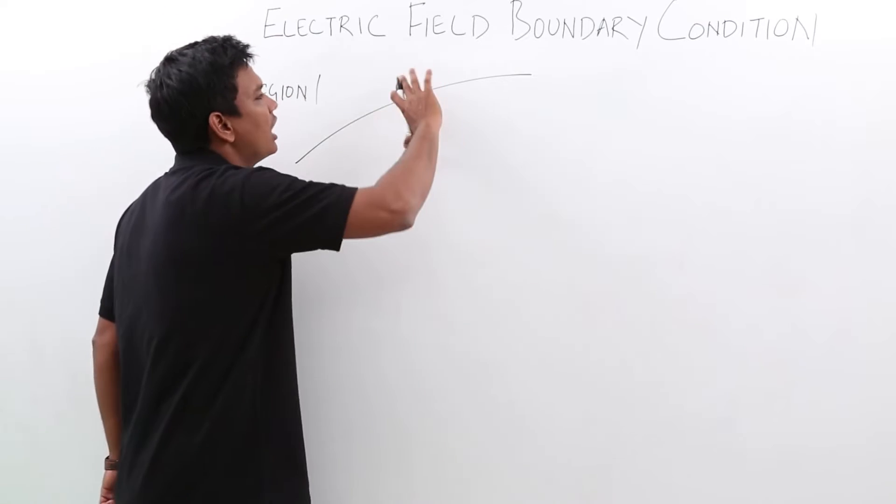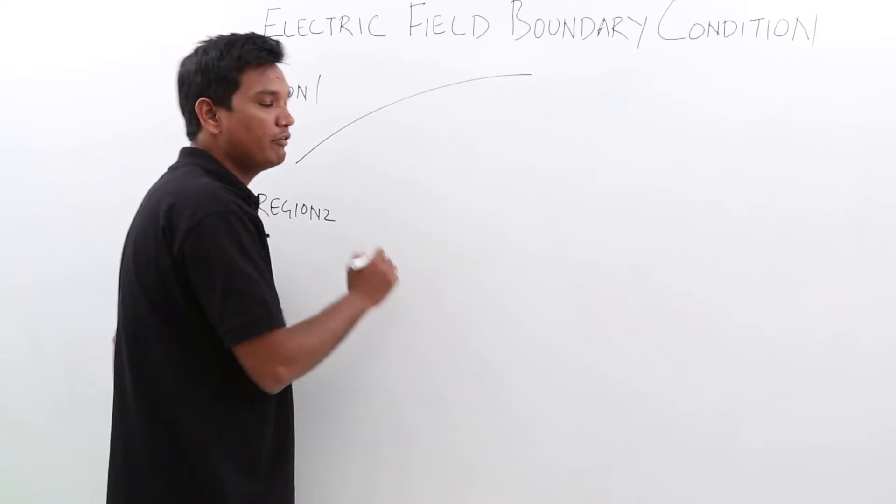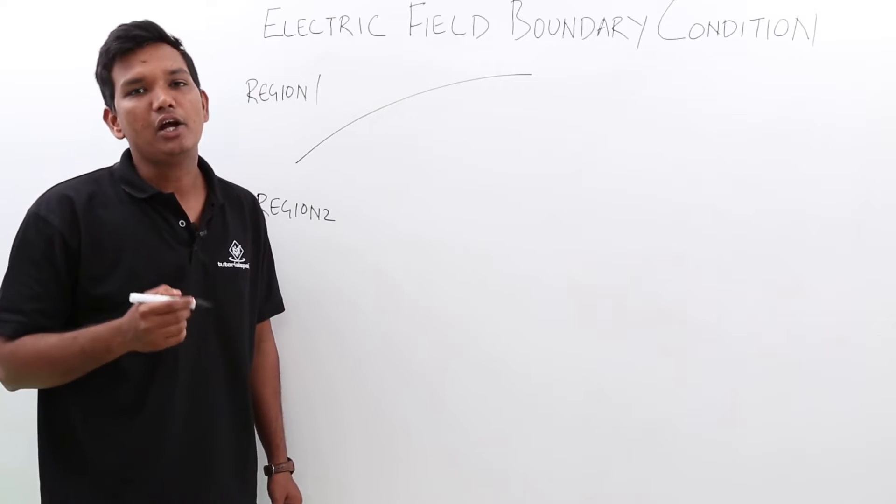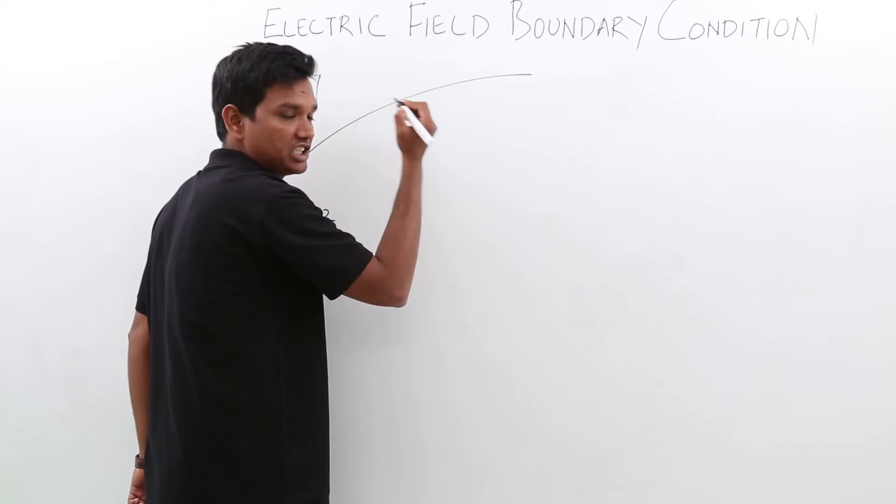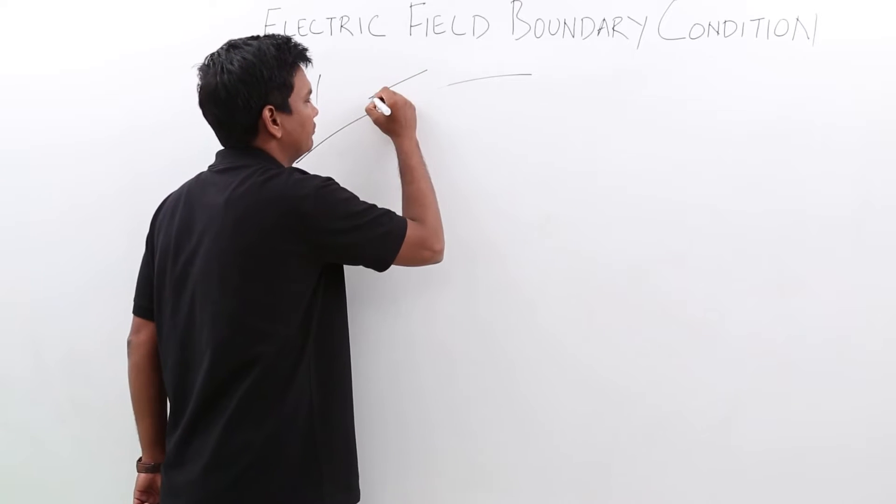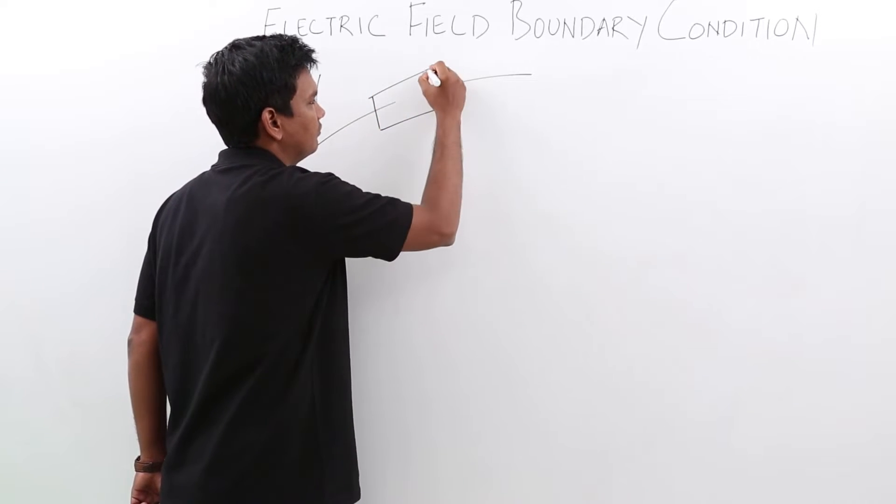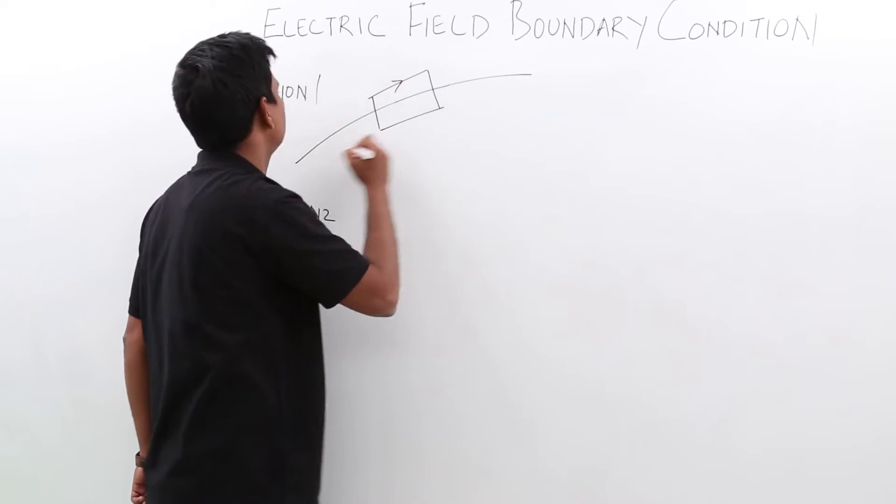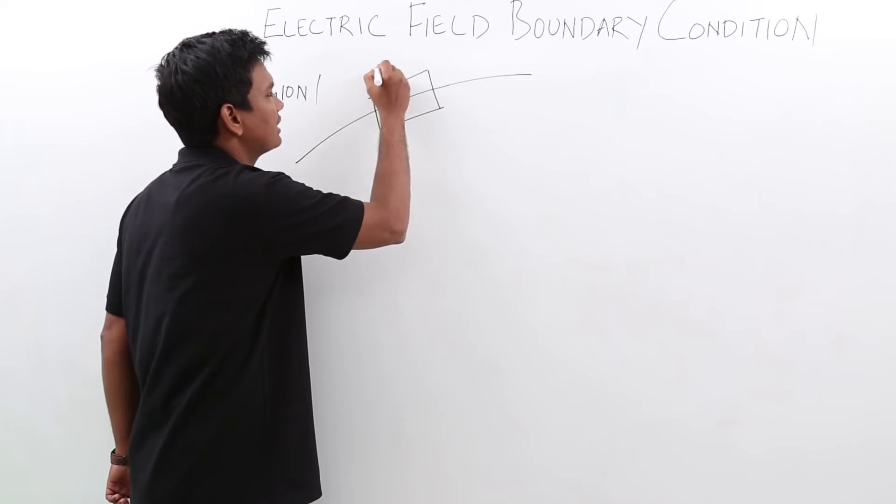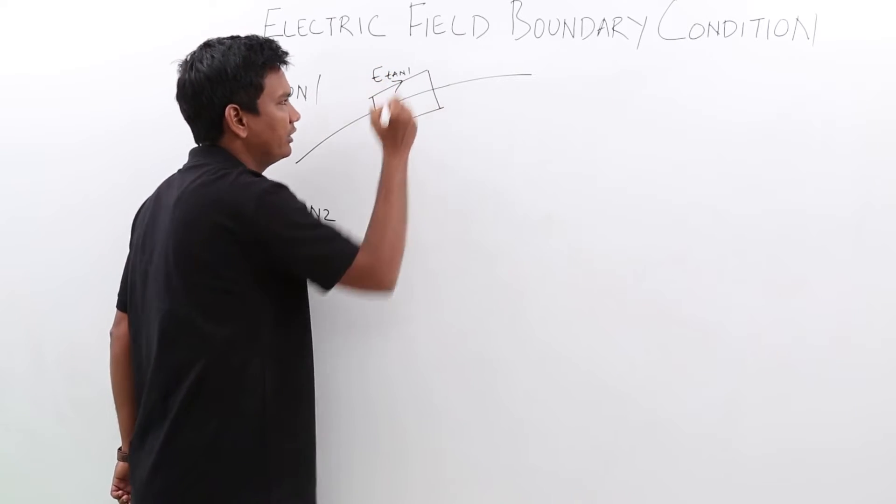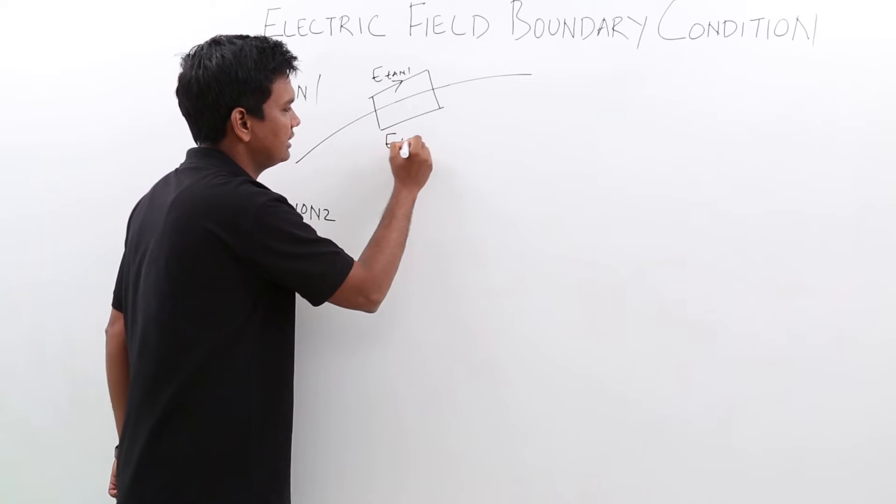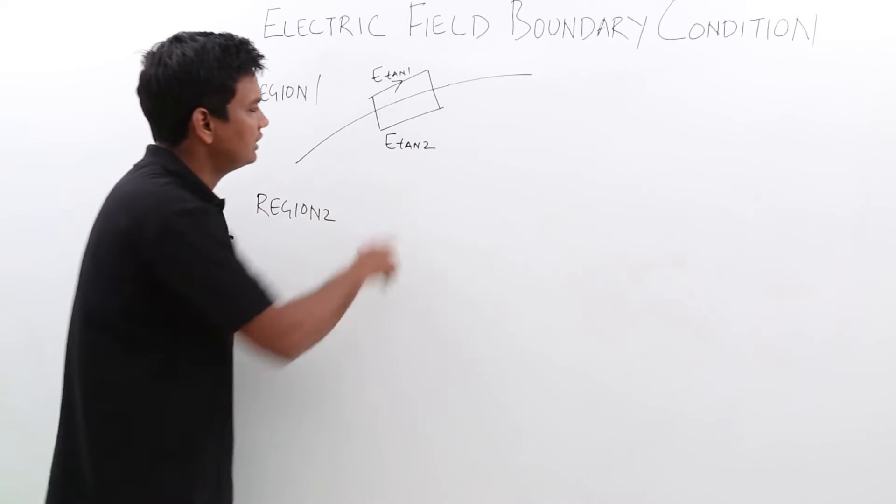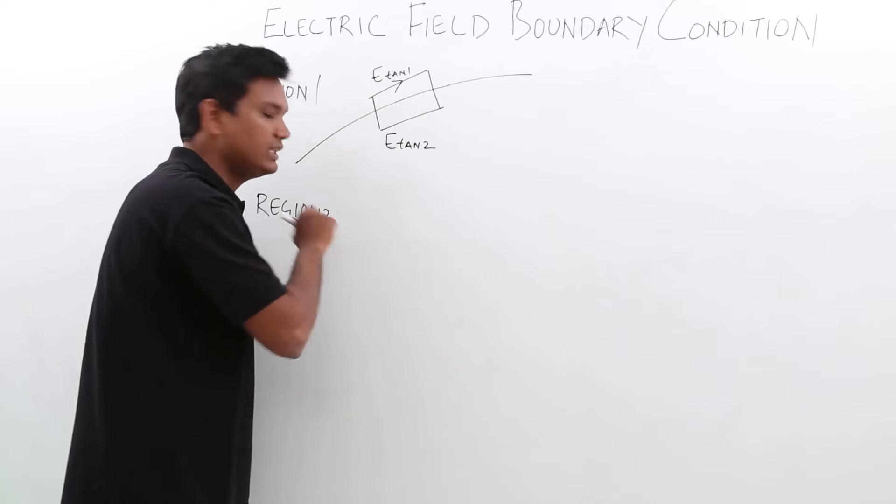This is a two dielectric medium. We have to find the tangential component of electric field and the normal component. Let us draw the tangential component first. Let me call this region 1, let me call this E tan 1, let me call this E tan 2. This means nothing but electric field tangential component in the second region.